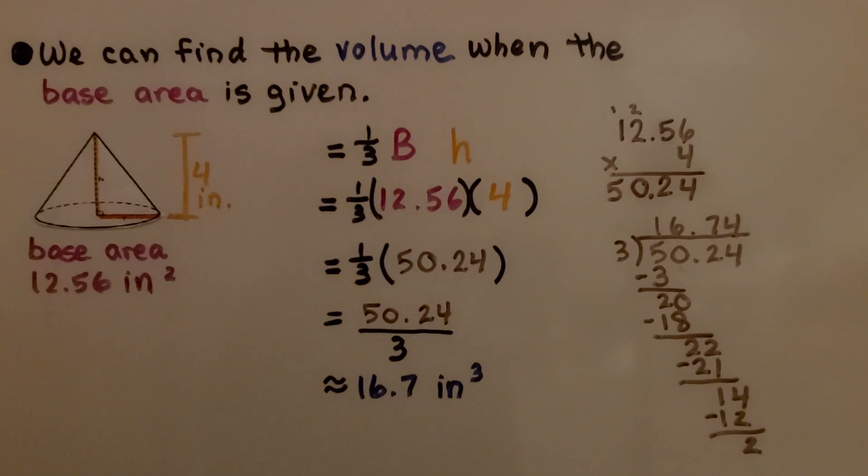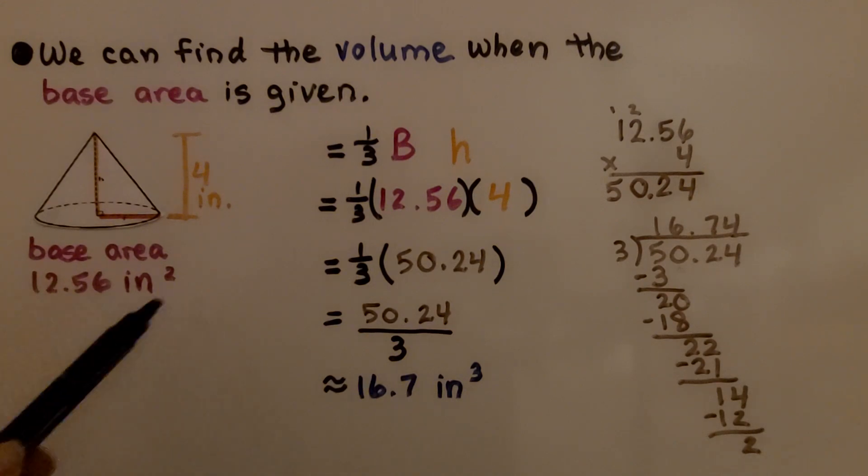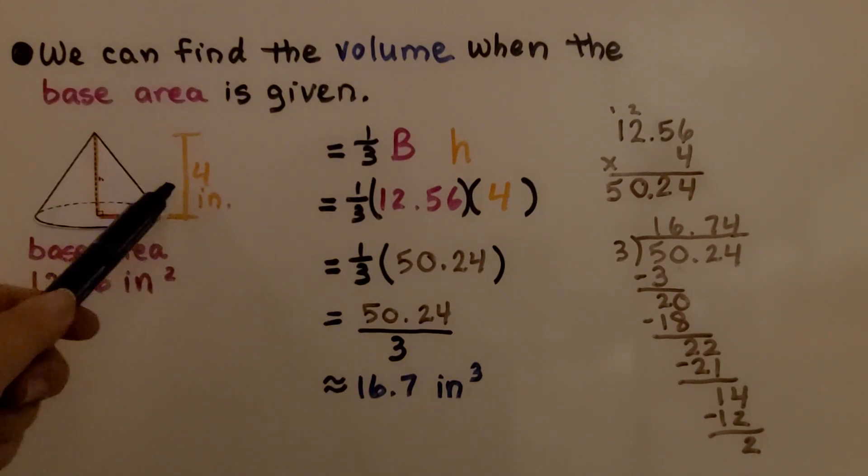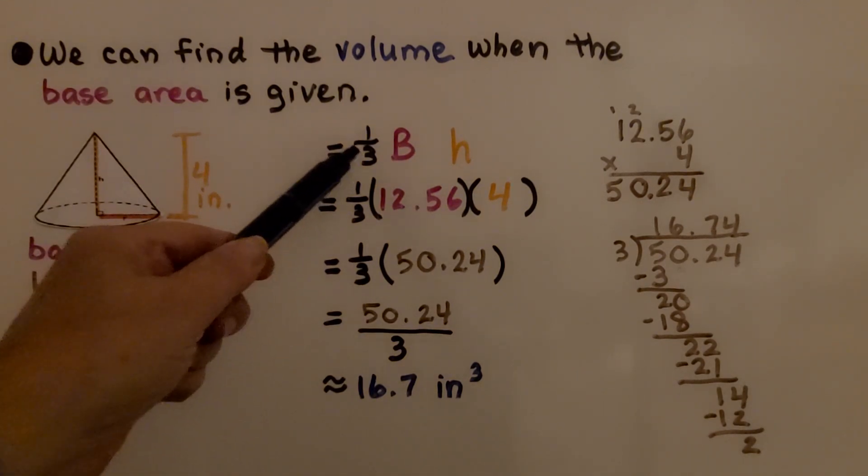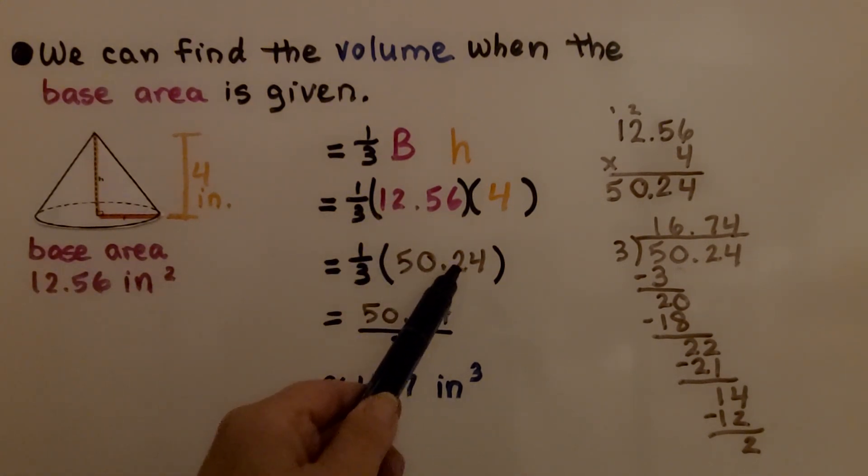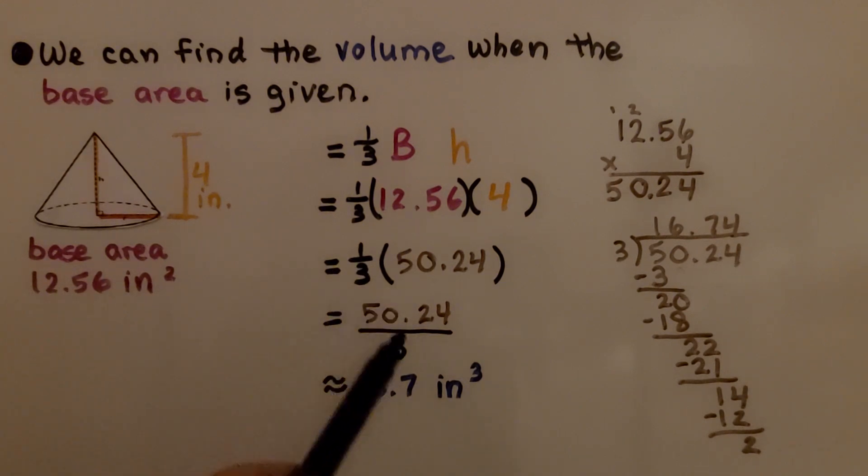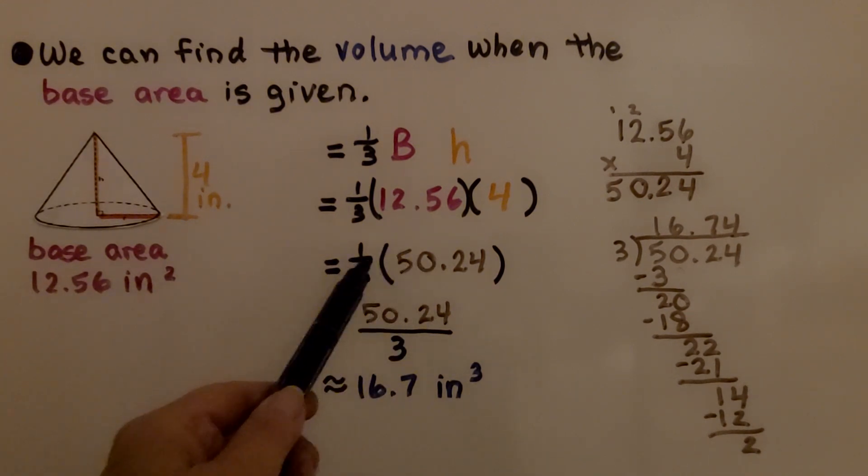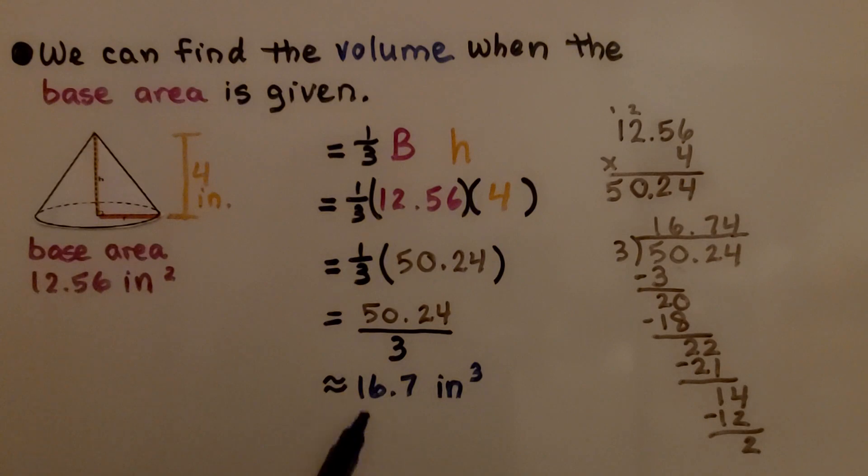We can find the volume when the base area is given. It's telling us the base area is 12 and 56 hundredths. We can just multiply it to the height and then by 1 third. We get 50 and 24 hundredths. And again, we can just divide it by 3 instead of multiplying it by 1 third. And we get approximately 16 and 7 tenths inches cubed.